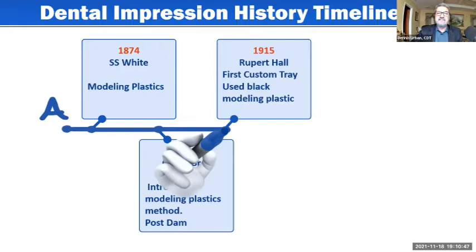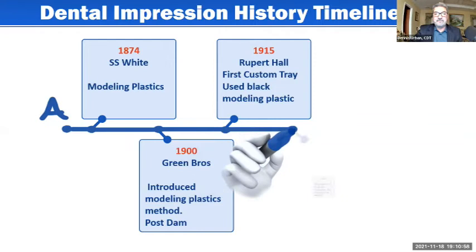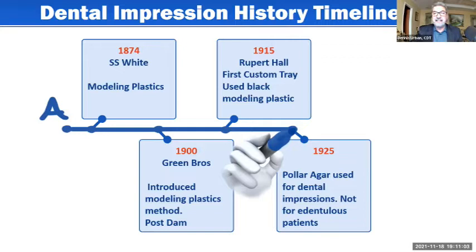In 1915, Rupert Hall used the first custom tray using black modeling plastic, much like the ones just discussed — we'll talk about stock trays versus custom trays a little bit later on. And in 1925, polyegar was used for dental impressions, which is pretty much like a reversible hydrocolloid. But it wasn't used for edentulous patients — it just didn't seem to work well with fully edentulous patients.